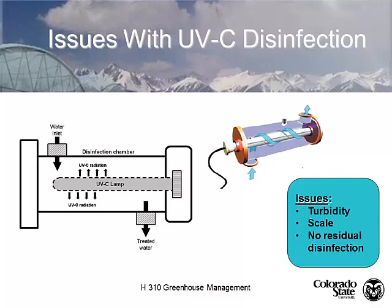Issues with UVC radiation: if the water has any debris reducing clarity, we need longer contact time or higher intensity. Water scale buildup on the lamp itself is a problem. Importantly, UVC does not provide residual disinfectant — when the water leaves the lamp, it's disinfected, but once it leaves, if there's an opportunity for contamination, it can be easily recontaminated. On the other hand, the lack of residual chemistry in the system is also a benefit since we're not adding any chemistry.